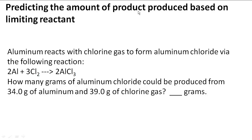Predicting the amount of product produced based on the limiting reactant. In this problem, aluminum reacts with chlorine gas to form aluminum chloride via the following reaction: 2Al + 3Cl2 → 2AlCl3. How many grams of aluminum chloride could be produced from 34 grams of aluminum and 39.0 grams of chlorine gas?